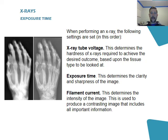When performing an x-ray, there are three settings you can change: the x-ray tube voltage, the filament current, and the exposure time. You perform them in the following order to produce the best image. First, you determine what type of tissue you're going to test and set the x-ray tube voltage, or hardness of the x-ray, to meet those requirements. Then you select the exposure time, which determines the clarity and sharpness of the image. Thirdly, you select the filament current, which relates to the intensity of the x-rays, and this is used to produce a contrasting image that includes all important information.